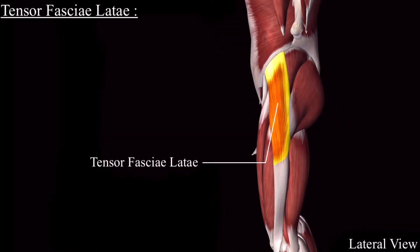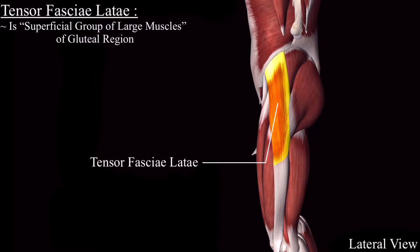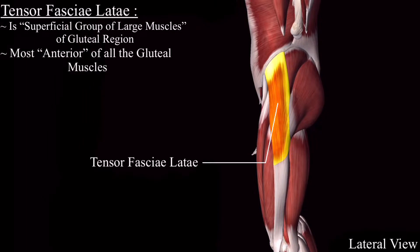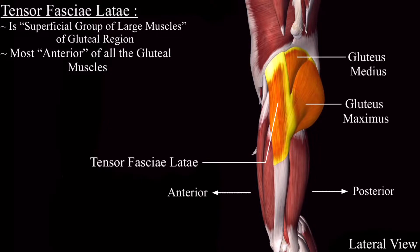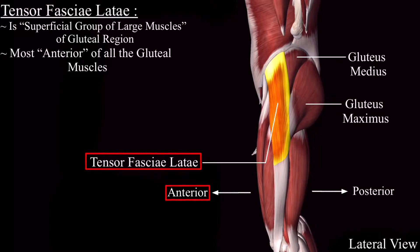Tensor fasciolata is one of the superficial group of large muscles. It is the most anterior of the superficial group of muscles in the gluteal region. As you can see, these are all the gluteal region muscles, and the tensor fasciolata is the most anterior of all these muscles.